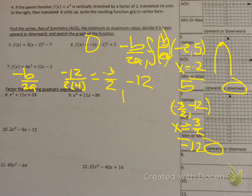Factoring: plus plus means plus plus in the parentheses. What two numbers multiply to give you 24 and add up to 11? You should quickly go: 1 and 24, 2 and 12, 3 and 8, 4 and 6. What two numbers add up to 11? 3 and 8. That's what goes in parentheses: x plus 3, x plus 8. You're done.